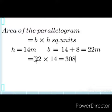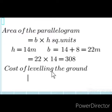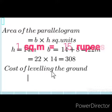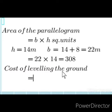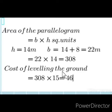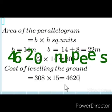We have found the area of the parallelogram. Now we are going to find the cost of leveling the ground for 308 square metres. By the question, the rate of 1 square metre is Rs. 15. So the cost of 308 square metres will be 308 multiplied by 15. If we multiply this, the answer will be 4620. So the cost for leveling the ground is Rs. 4620.